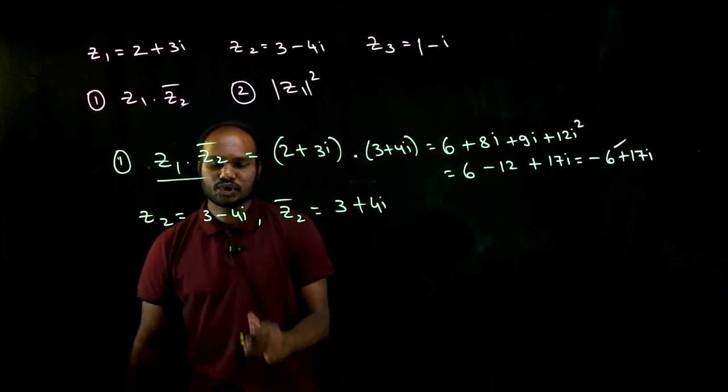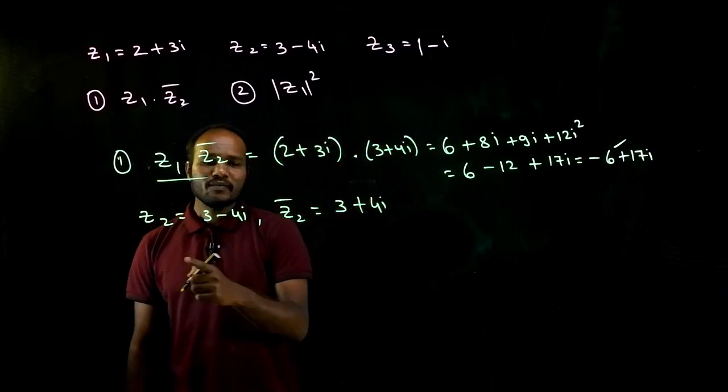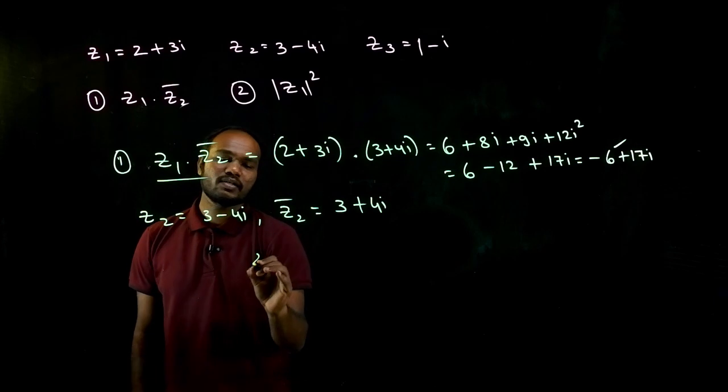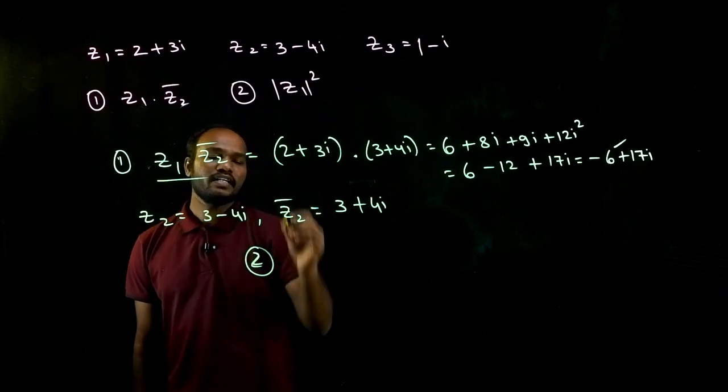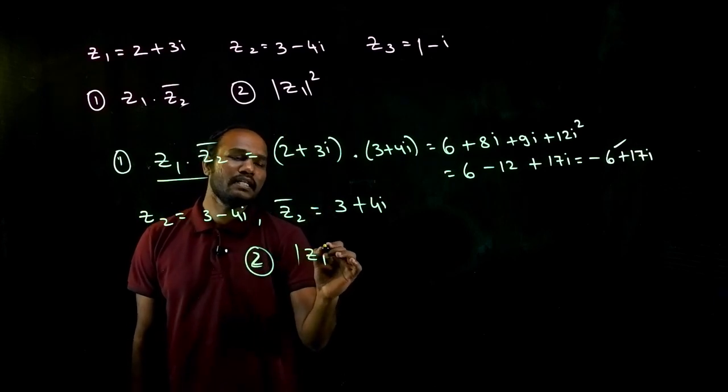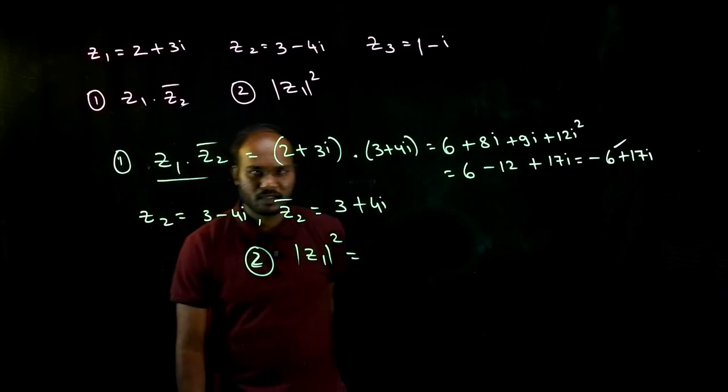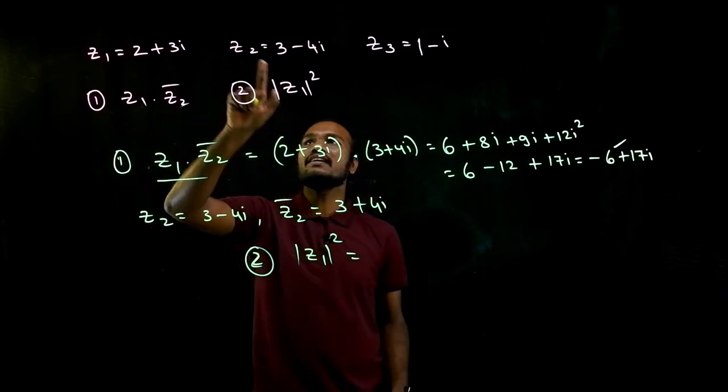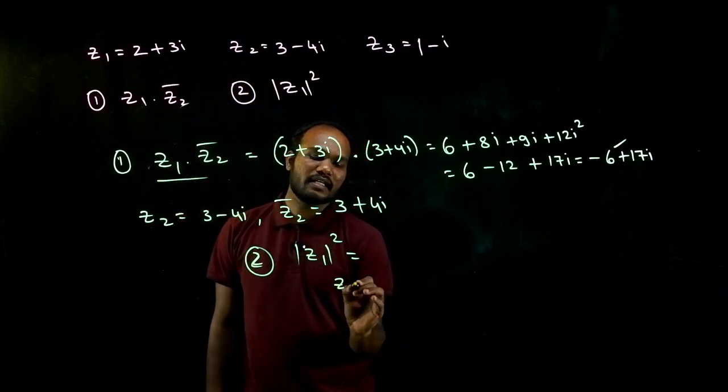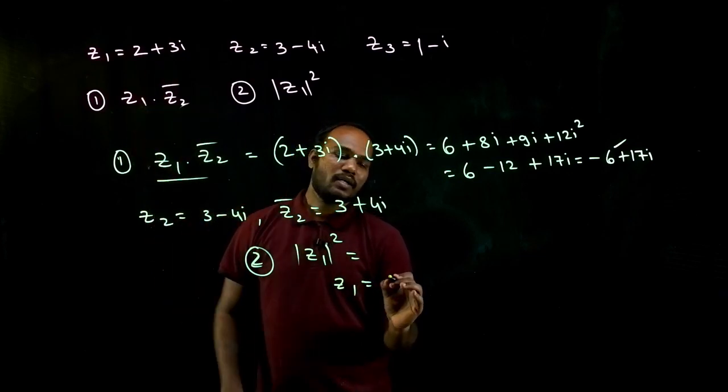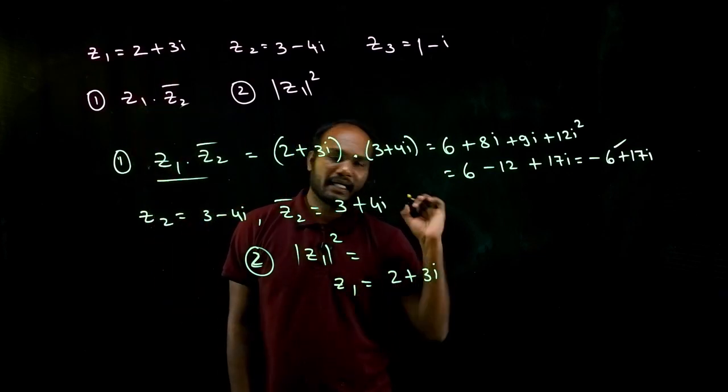Is that okay? Let's go to the next question. What is the second question given? We have to find the value of magnitude of z1 whole squared, right? So what is z1 first? That one is given as 2 plus 3i.